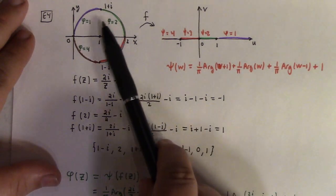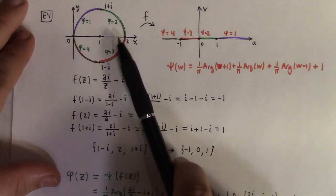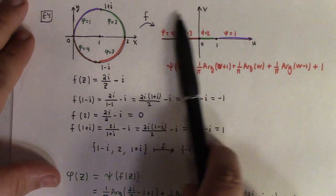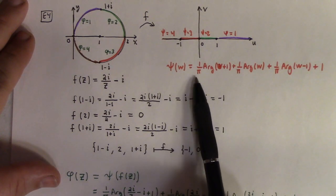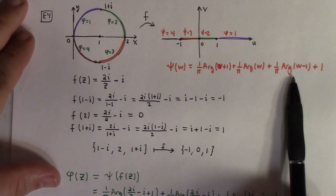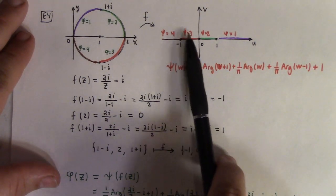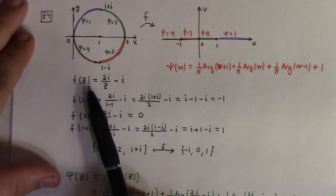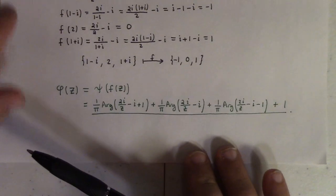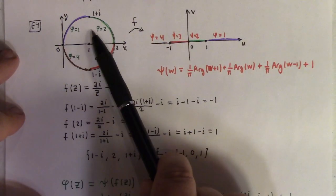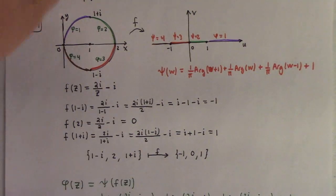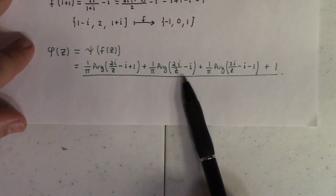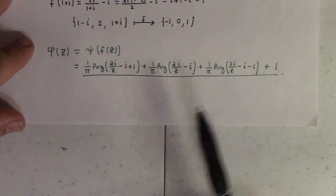I want to solve Laplace's equation on this disk with boundary values 1, 2, 3, and 4 on the four quarter-circles. Using conformal mapping, I know the template solution from the previous upper half-plane example: ψ(w) = (1/π)arg(w+1) + (1/π)arg(w) + (1/π)arg(w−1) + 1, which gives boundary values 4, 3, 2, 1 there. Replacing w with f(z) = 2i/z − i gives the solution φ(z) on the disk with those boundary values. That's how you do it.